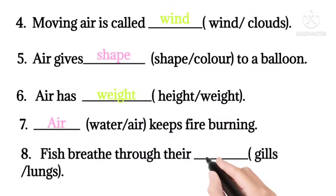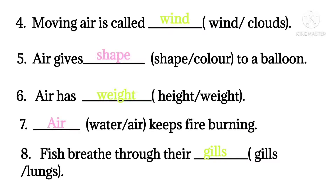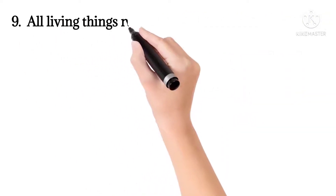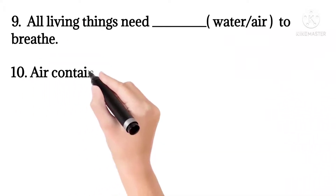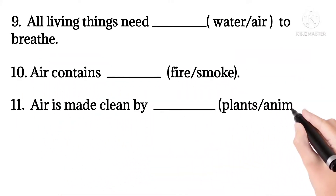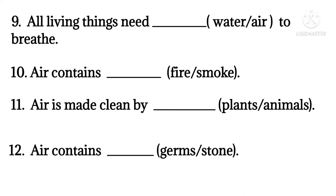For example, if we cover a burning candle with a glass tumbler, the candle stops burning after some time because there is no air left in the tumbler. Question 8: Fish breathe through their gills or lungs. Correct answer: gills. Fish is an aquatic animal; it lives in water. Question 9: All living things need water or air to breathe. Answer: air. Question 10: Air contains fire or smoke. Answer: smoke.